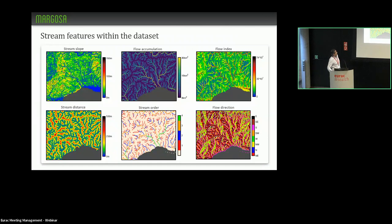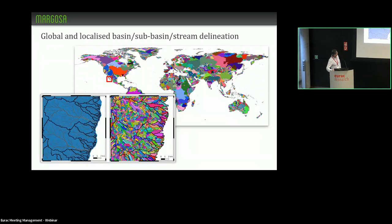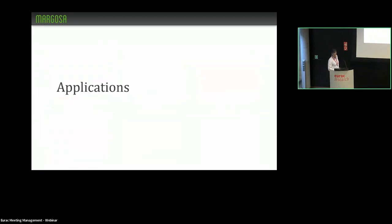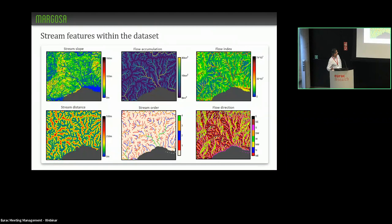Here's a select sample visualization of some of the stream features. There are over 25 stream characteristics in this dataset — these are just six of them: stream slope, flow accumulation, flow index, stream distance, various types of stream order, and flow direction.